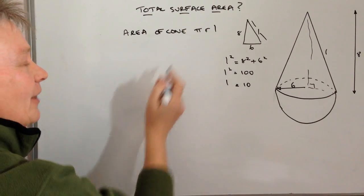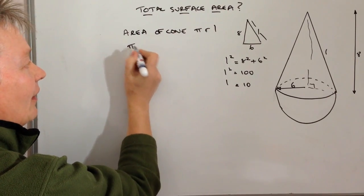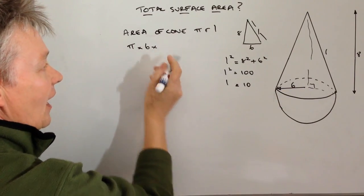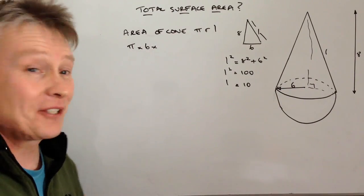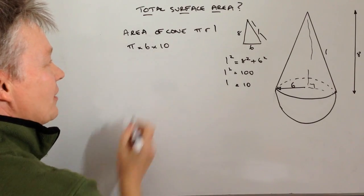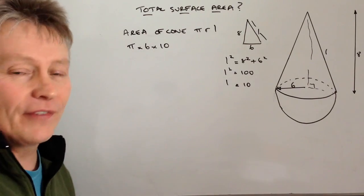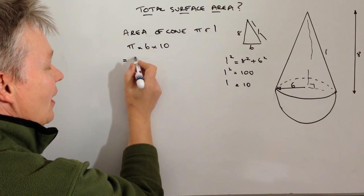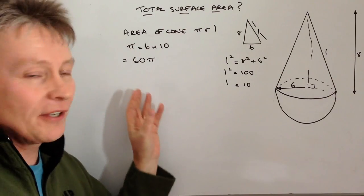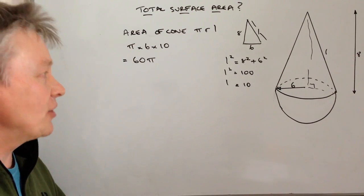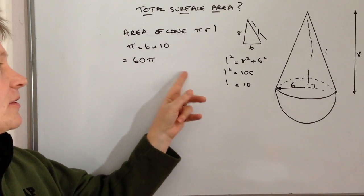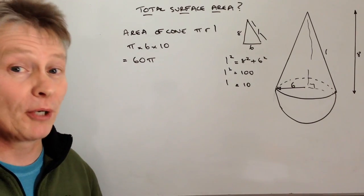So the area of the cone is going to be π multiplied by the radius of 6 and the slant height which is 10. Now what I'm going to do, just for the purposes of this, is not calculate this. I'm just going to leave this as 60π, which I know is the area of the cone. It's just a little bit neater, a little bit easier to do, rather than writing out lots of numbers when you multiply through by π.